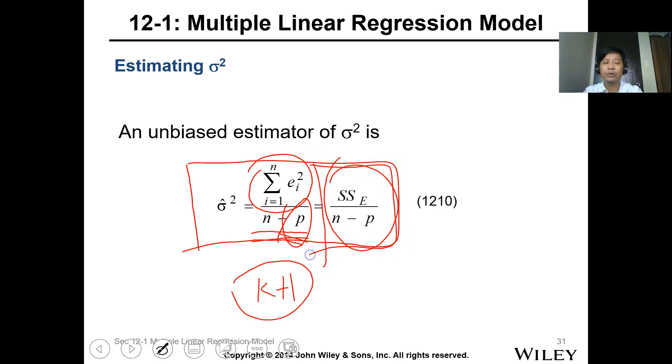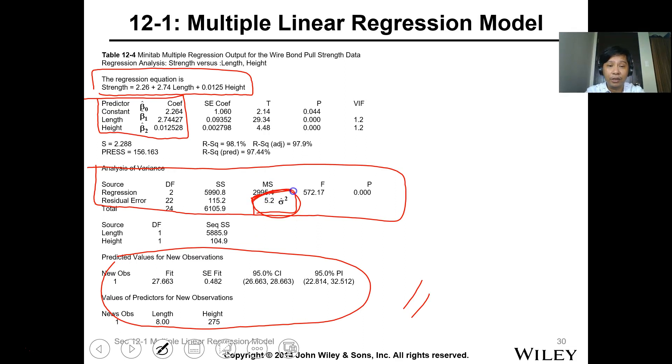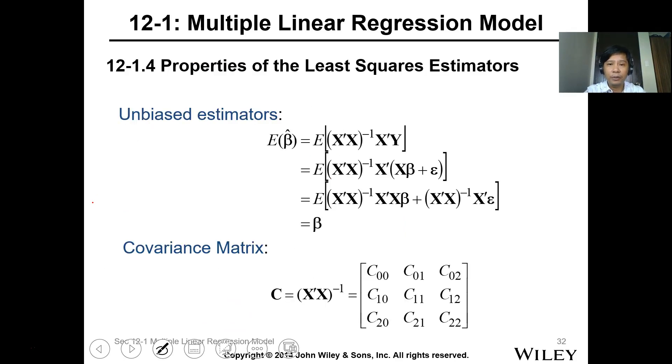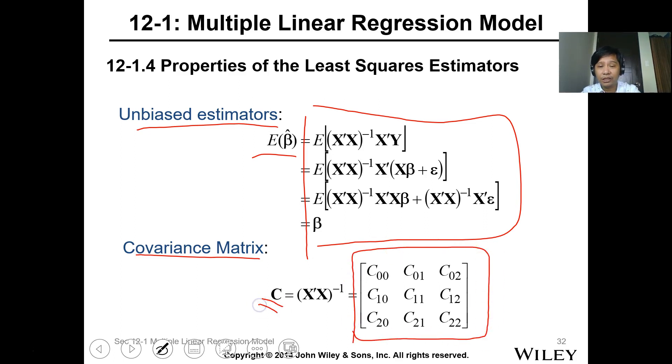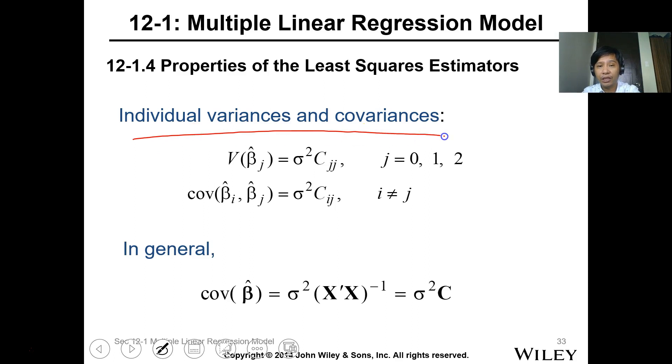K plus 1 is the number of coefficients. This is just equal to SSE over n minus p. If you had analysis of variance class, this is just the MSE for residual error. Let's proceed with the properties of the least squares estimator. For individual variances and covariances, this is the variance formula, this is the covariance.